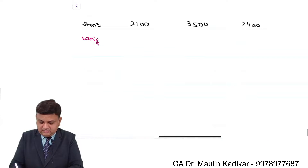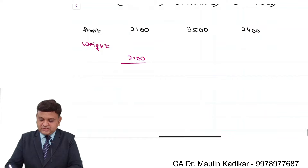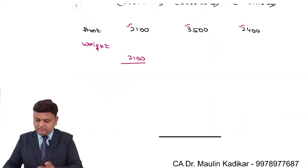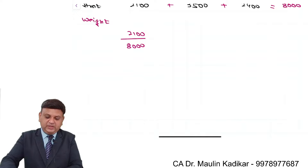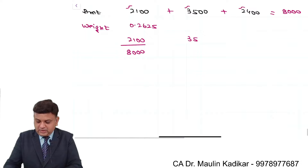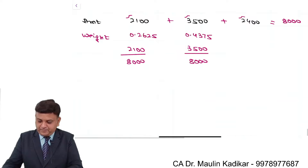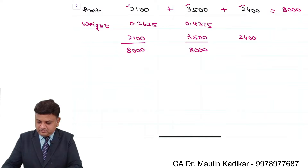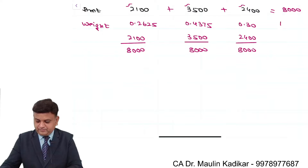Now we compute the weight of each security in the combined portfolio. The total investment is 2100 + 3500 + 2400 = 8000 rupees, which is also 5000 + 3000 = 8000. So: weight of A = 2100/8000 = 0.2625, weight of B = 3500/8000 = 0.475, and weight of C = 2400/8000 = 0.30. The total of course equals 1.